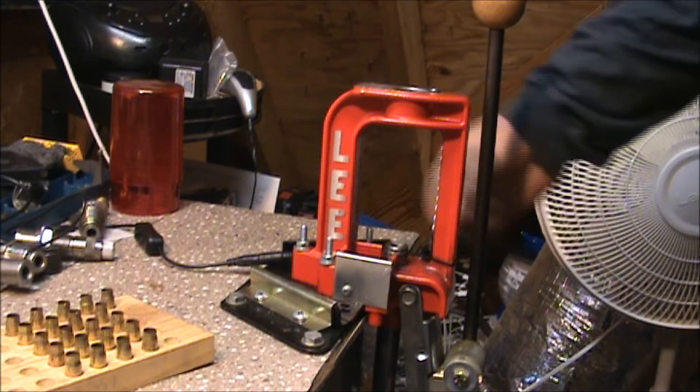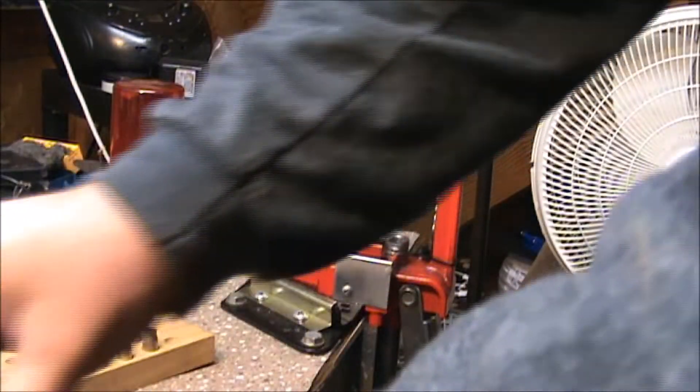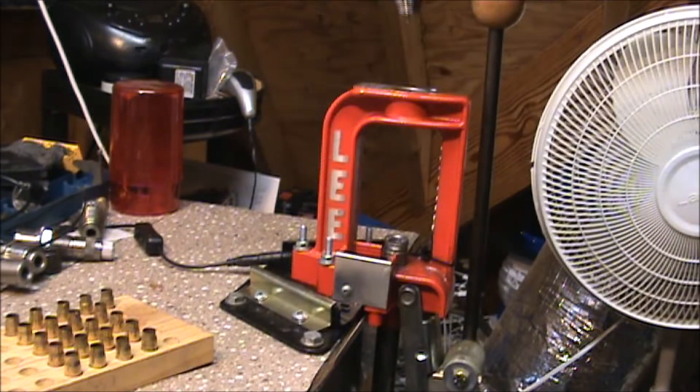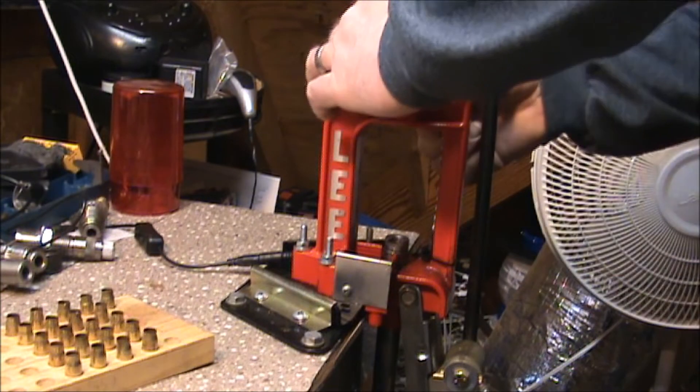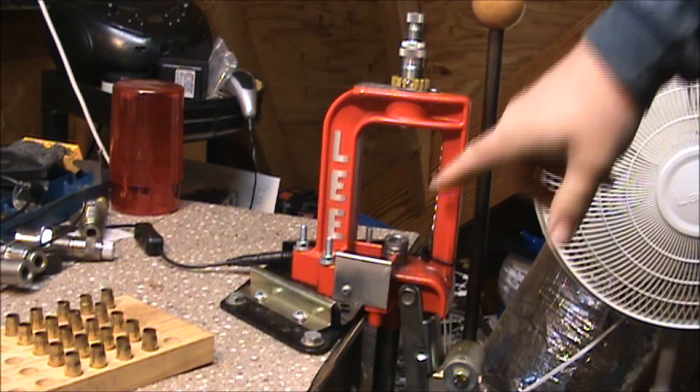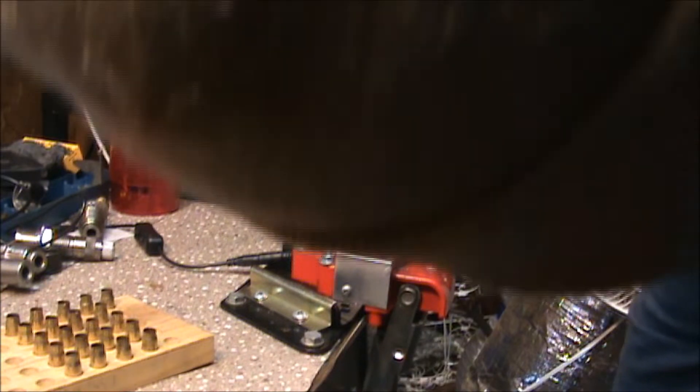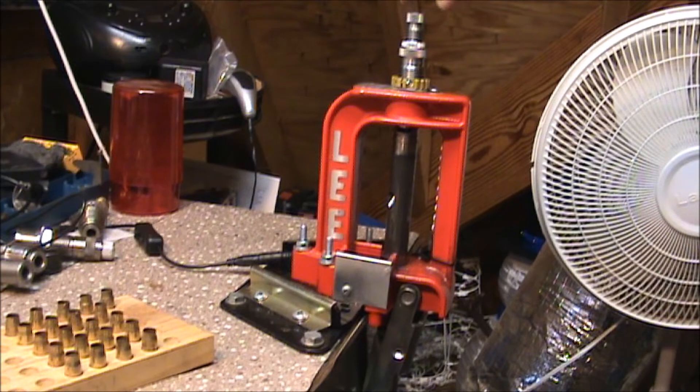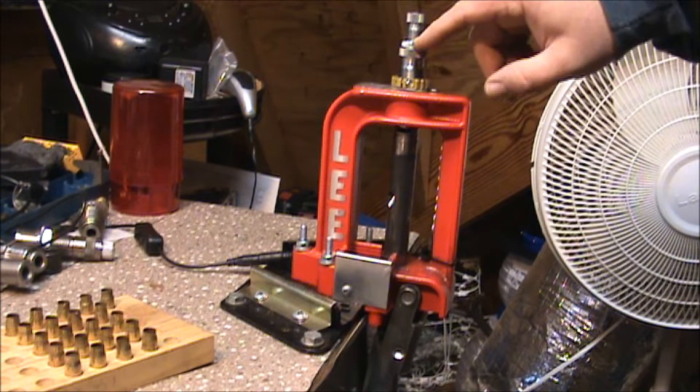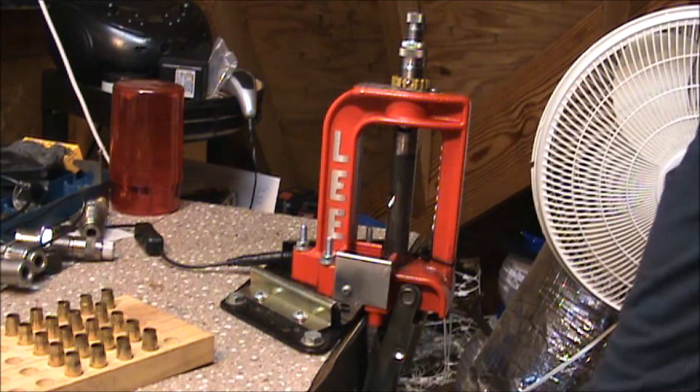So take our size 21 shell holder and I'm going to take my CH 40 sizing die. They don't come with instructions, but just like any other sizing die, you want to raise your ram all the way up to where it bottoms out and make sure you have everything. Make sure you have the die set up to where you can get a full stroke as far as decapping.